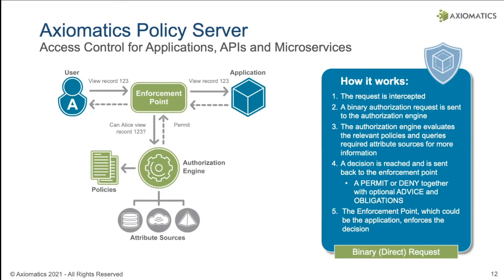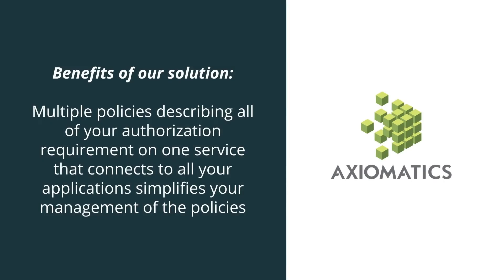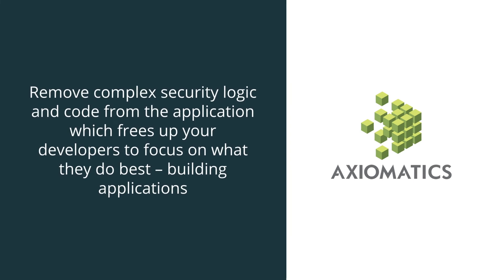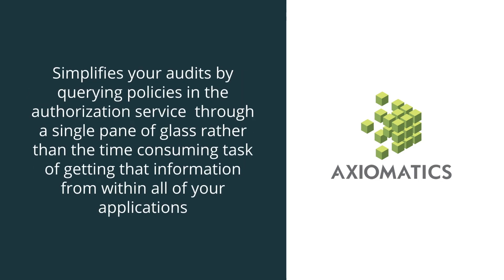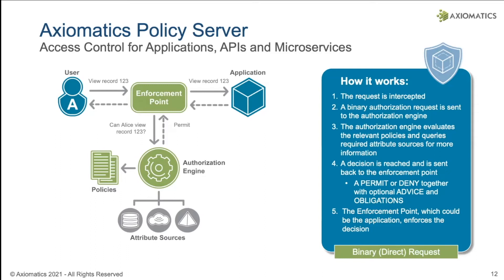We can do other policies as well. Maybe there are supervisors and managers that can view any record regardless of department. We can have multiple policies describing all your authorization requirements on one service that can then be consumed by all your applications. Your applications no longer need to have all this complex authorization logic and extra code in them, freeing up your developers to focus on business code. This also makes it much easier to audit your authorization, because instead of having to go through hundreds of applications reading thousands of lines of code, we can go to the authorization service and query the policies there to get a holistic view — a single pane of authorization — of your environment.